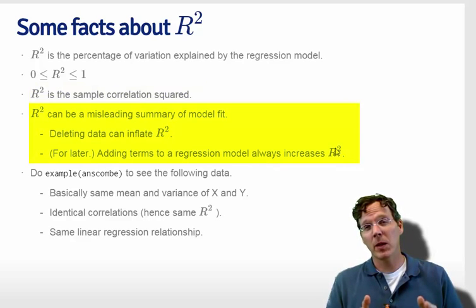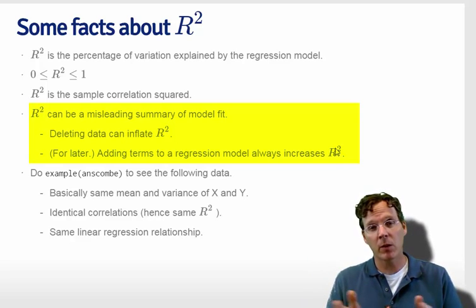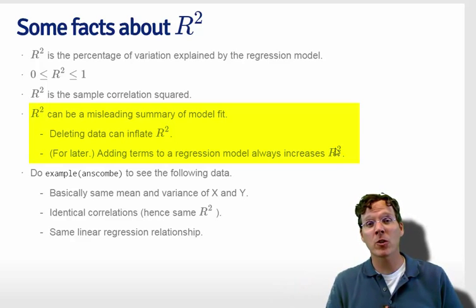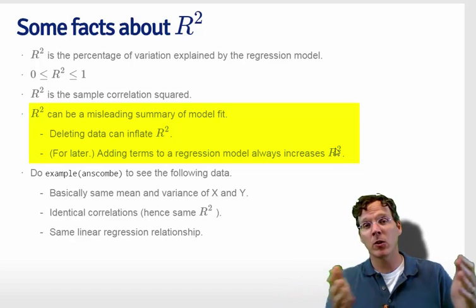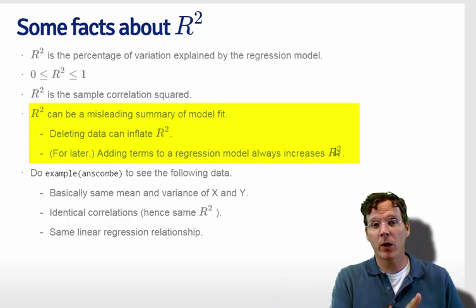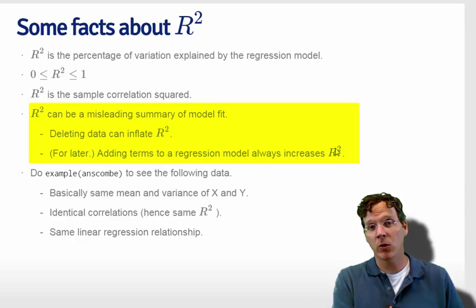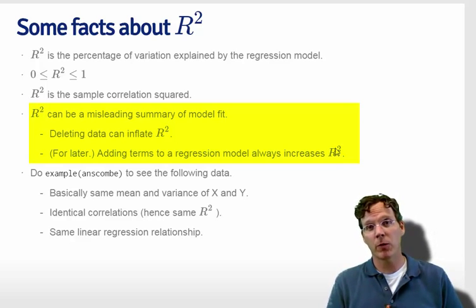r squared can be a misleading summary of model fit. For example, if you have somewhat noisy data and delete a lot of the points in the middle, you can get a much higher r squared. Or if you just add arbitrary regression variables into a linear model fit, you increase r squared and you decrease mean squared error, the average squared residual variation. So these things have to be taken into mind if you're using them to assess model fit.